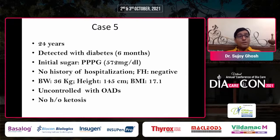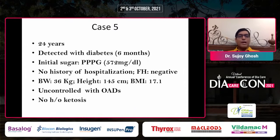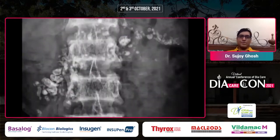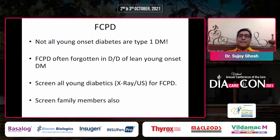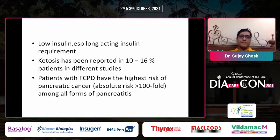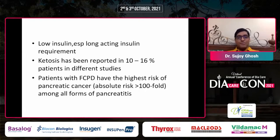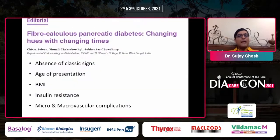Case 5: A 24-year-old gentleman with very high postprandial glucose, no hospitalization history, family history negative, very low body weight and BMI, uncontrolled on oral agents, and no history of ketosis. The X-ray showed extensive intraductal pancreatic calcification, classical of FCPD. Not all young thin patients are type 1 — it could well be FCPD. Screen all young individuals and family members for FCPD. Though rare, ketosis may happen in FCPD. These patients usually have no basal insulin requirement, suffer recurrent hypoglycemia, and are at great risk of malignancies.